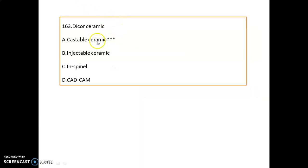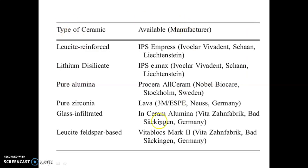What is Dicore ceramic? It is an example of castable ceramic. Important ceramics and their other names: Lucite reinforced is IPS Empress; Lithium disilicate is e.max; Pure alumina is Procera all-ceramic; Pure zirconia is Lava; Glass infiltrated is In-Ceram alumina; and Leucite feldspar-based is Vitablocs Mark II.